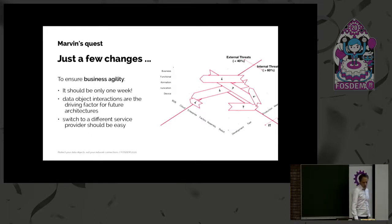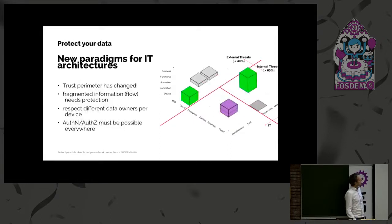And then we asked Marvin, so what do we need to change? And he said, okay, so if you look at this picture, then what is clear is that the trust perimeter has changed. So before we were used to define zones where everything was secure, that doesn't exist anymore. Because our fragmented information and information flows and interactions are far more versatile than they have been until now.